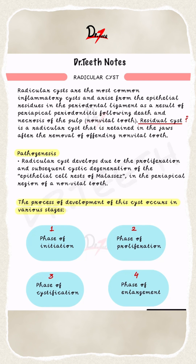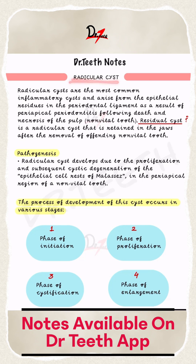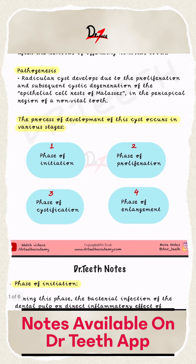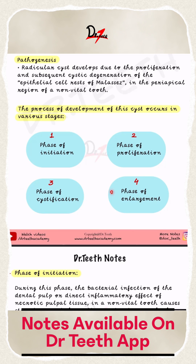Hello everyone, Assalamu alaikum. Today we are going to learn about the pathogenesis of the radicular cyst. The development of the cyst occurs in four stages: the phase of initiation, phase of proliferation, phase of cystification, and the phase of enlargement.